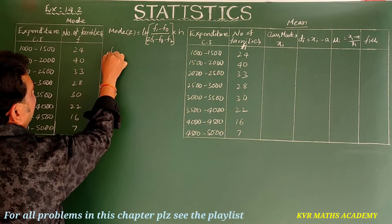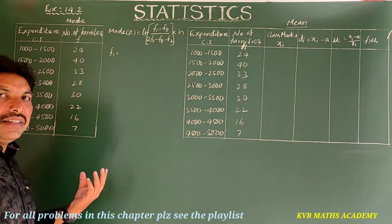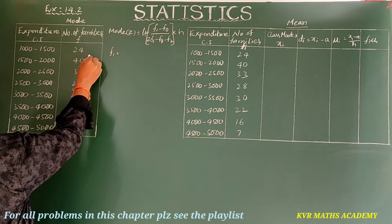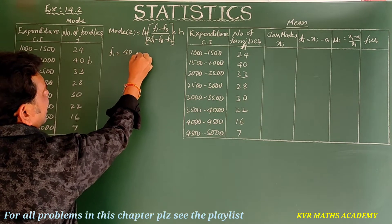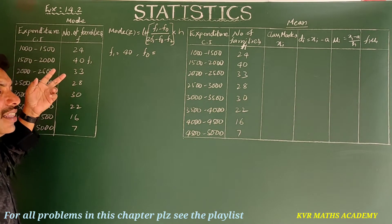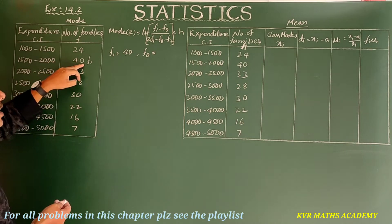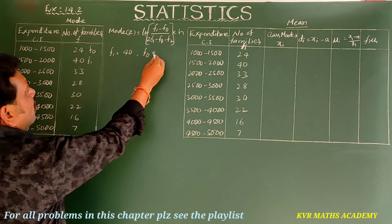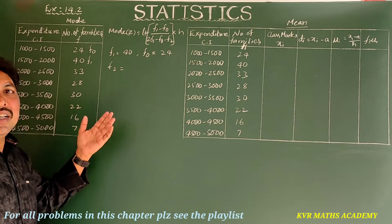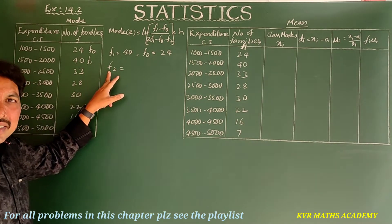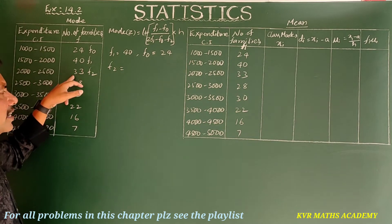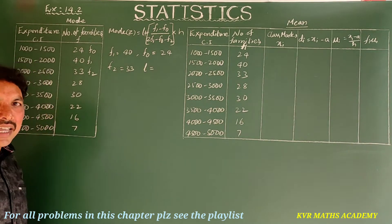From the table, f1 is the frequency of the modal class — the highest frequency. The highest frequency is 40, so f1 = 40. f0 is the frequency of the class before the modal class, which is 24, so f0 = 24. f2 is the frequency of the class succeeding the modal class, which is 33, so f2 = 33.